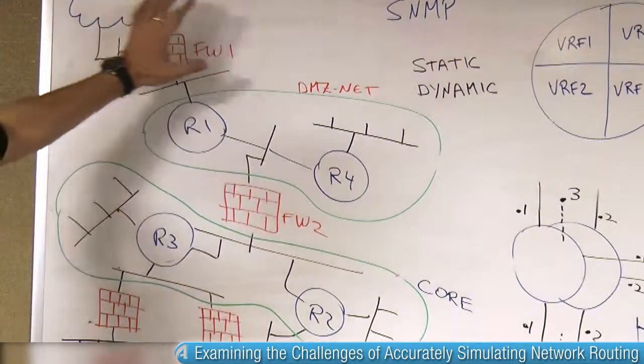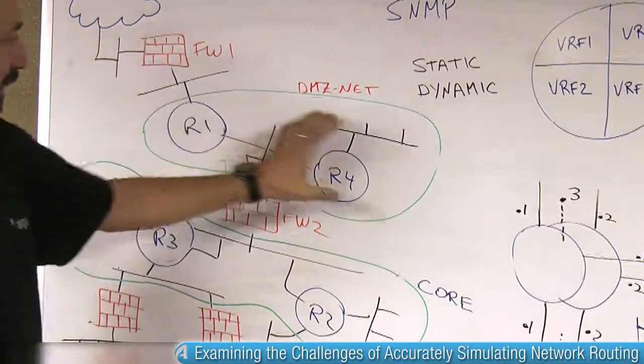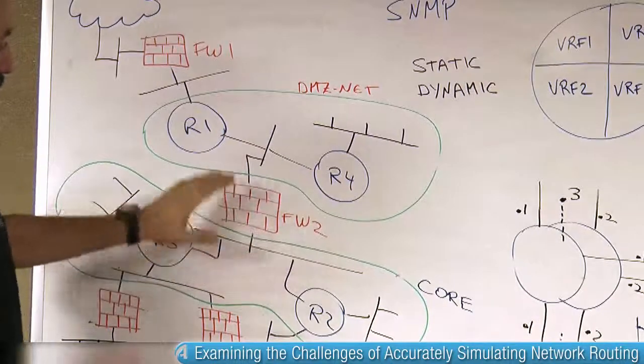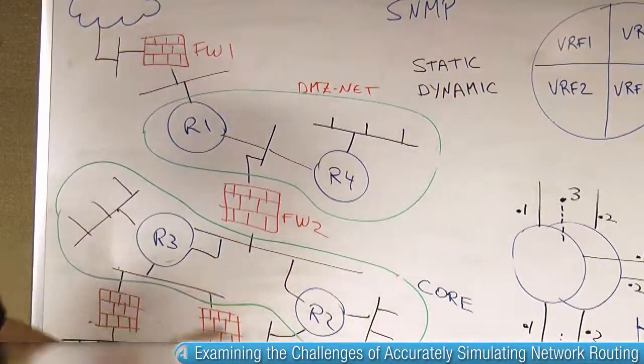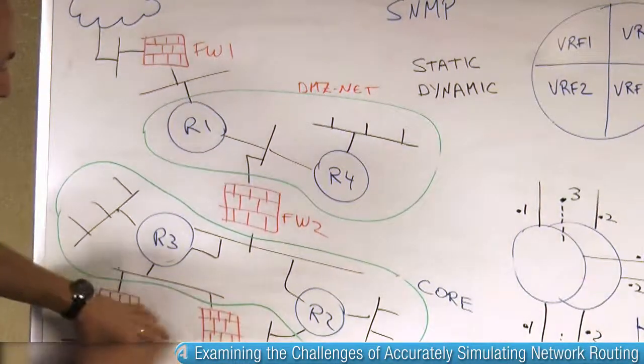So you have several firewalls and then you have like a DMZ network with some other firewalls behind it and then the core backbone and behind that some more firewalled off silos.